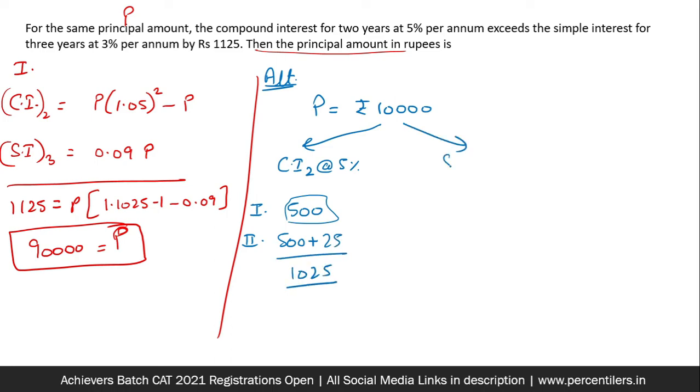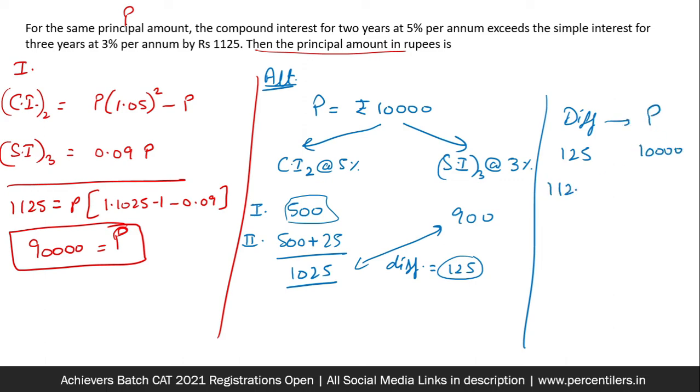Now simple interest for three years at 3% would simply be 9%. So that would be 900 rupees. What is the difference between these two is 125. Now this difference is going to tell us the answer. So when the difference is 125, the principal was 10,000. When the difference becomes 1125, the principal would be and that's where you get 90,000.